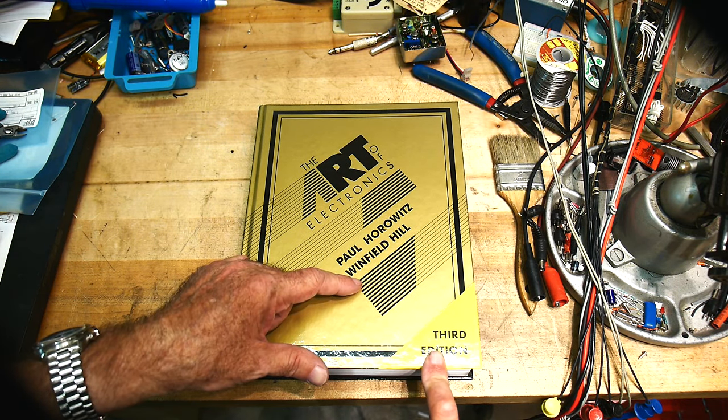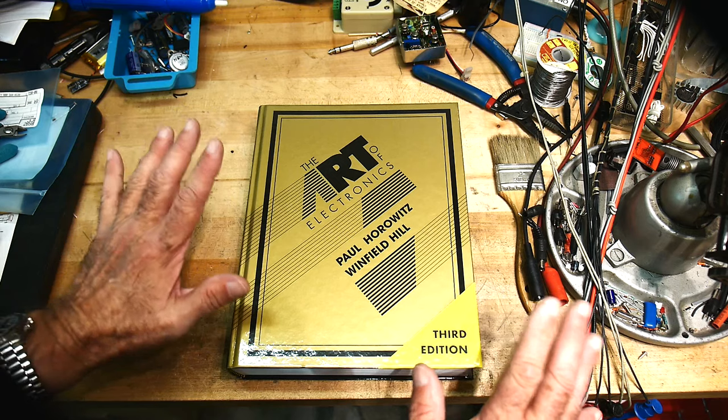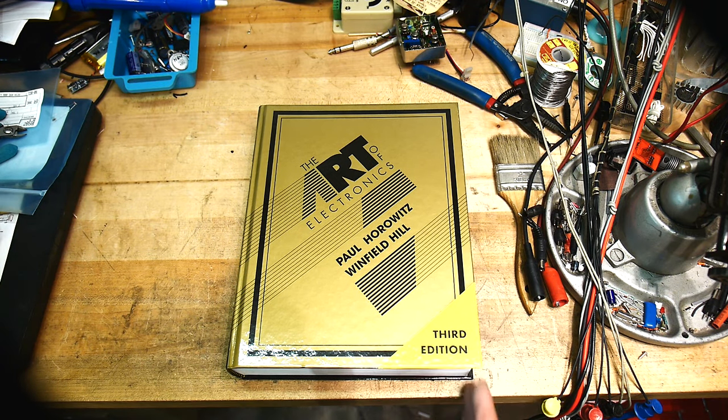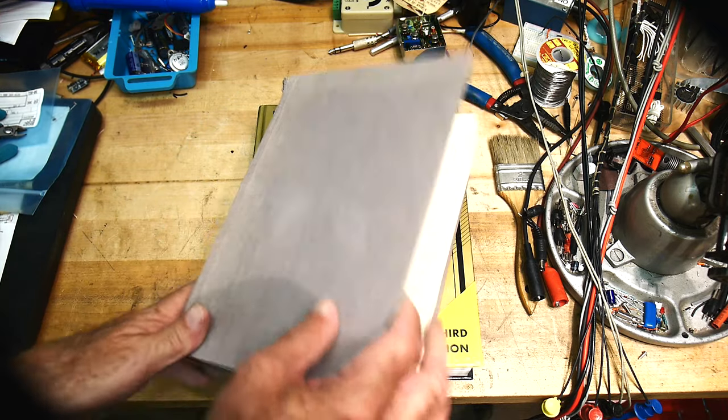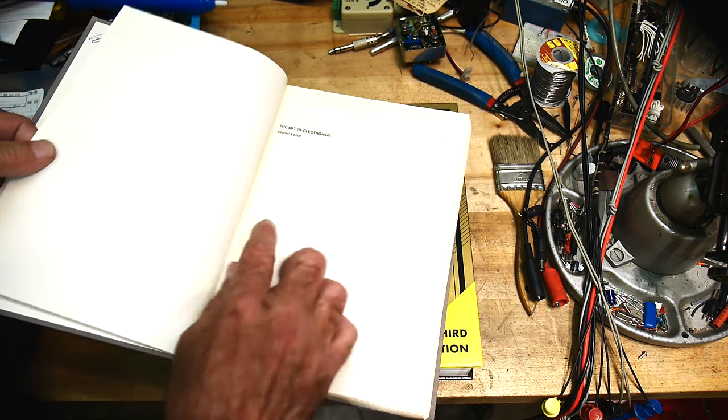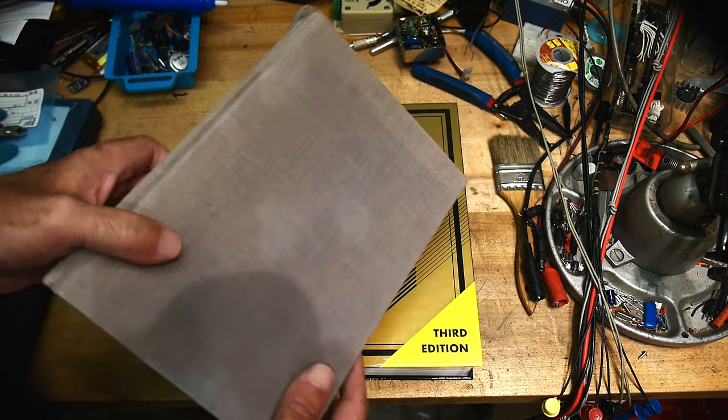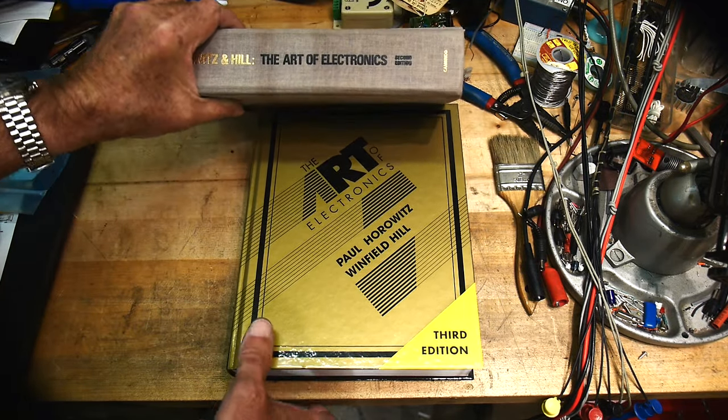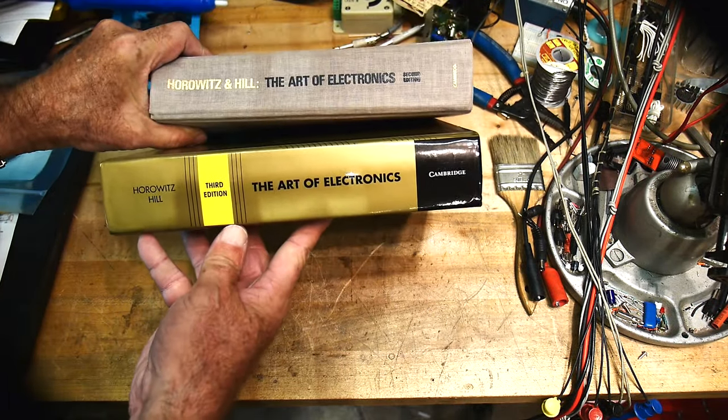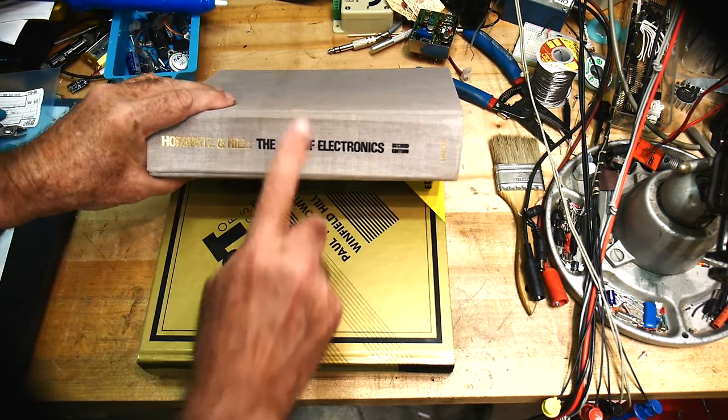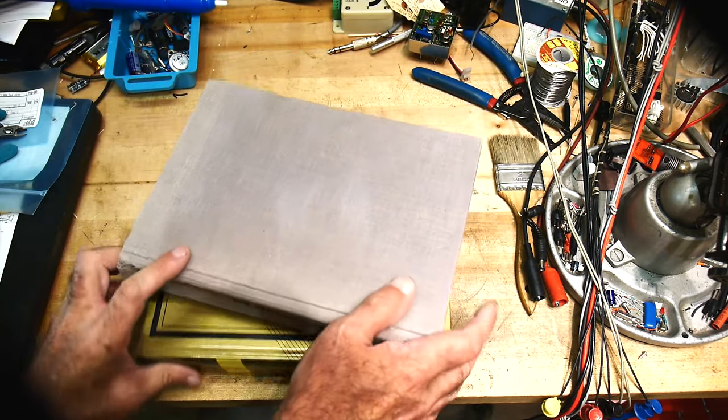It's in its third edition right now. So if you buy a third edition, it's going to be expensive. But there is a second edition. So this is the second edition. And so this one might be cheaper. They're all called Horowitz and Hill Art of Electronics. So this is the second edition. So you might be able to find a used copy of this.